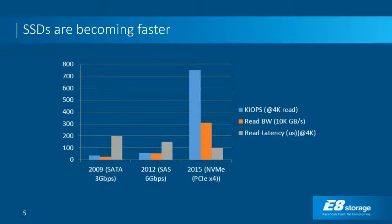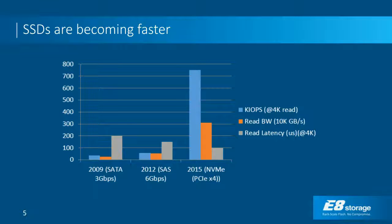A single NVMe SSD now approaches almost a million IOPS — roughly 750,000 IOPS on average — with latency much lower than SAS or SATA SSDs. What E8 has built is a product that is not simply a disk replacement like Gen 1 flash solutions, but a new architecture that takes full advantage of the speed of NVMe.